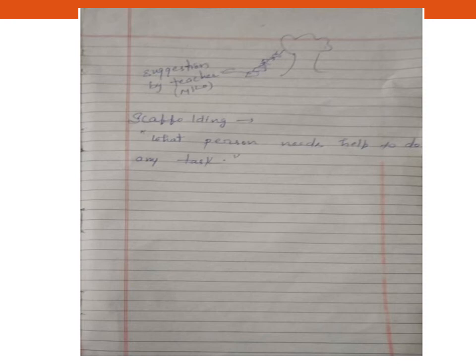What happened to the child? He helped the child step by step. Now, what is the ZPD? The next time, the child is able to do the task independently. He helped to provide support, but eventually steps back and says, yes, go. The child has to do the task on their own — that's the ZPD. So, scaffolding means someone needs help to do any task.